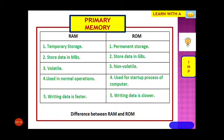The last point of difference: writing data in RAM is faster, while writing data in ROM is slower. We are also seeing units like MBs and GBs here, which we will look at shortly. Differences between RAM and ROM is a very important question that comes up often in exams.